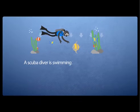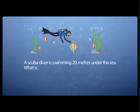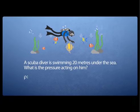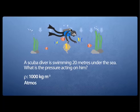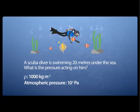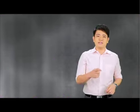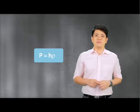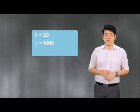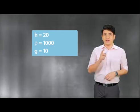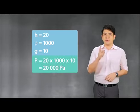Let's look at another popular question. A scuba diver is swimming 20 meters under the sea. What is the pressure acting on him? Given the density of water is 1000 and the atmospheric pressure is 10 to the power of 5 pascals. Just take the formula P equals H rho G. Insert H as 20, rho as 1000, G as 10. That gives you 20,000 pascals.